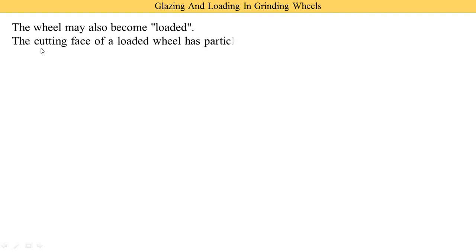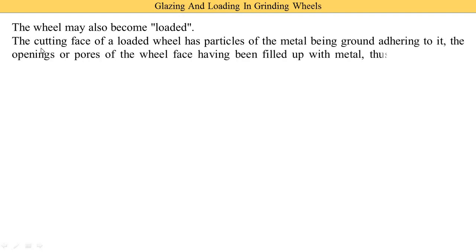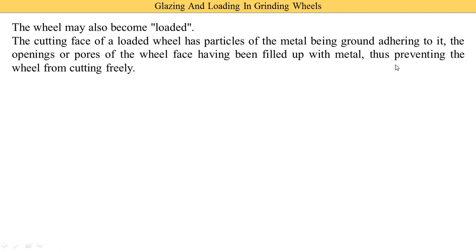The wheel may also become loaded. What is the meaning of loaded? The cutting face of a loaded wheel has particles of metal being ground adhering to it. During grinding operations, some chips or material removed from the workpiece adhere to the abrasive particles of the grinding wheel. This cheap material removed from the workpiece also fills the pores — the openings available on the grinding wheel. When these pores of the wheel face are filled up with metal removed from the workpiece, it prevents the wheel from cutting freely.